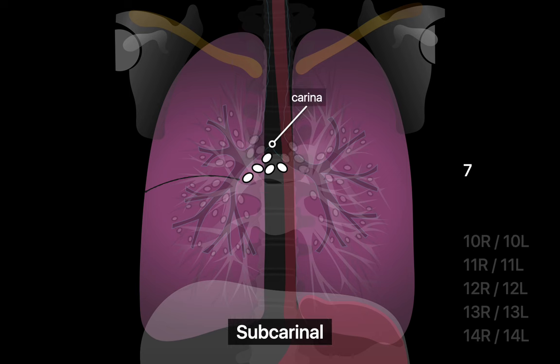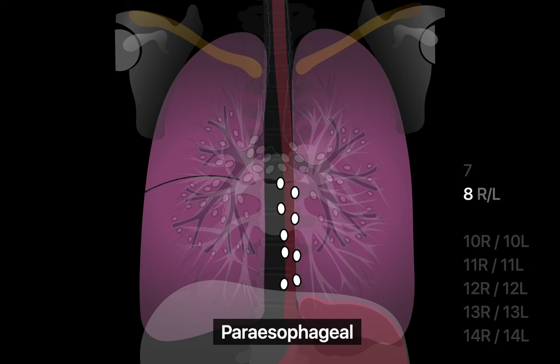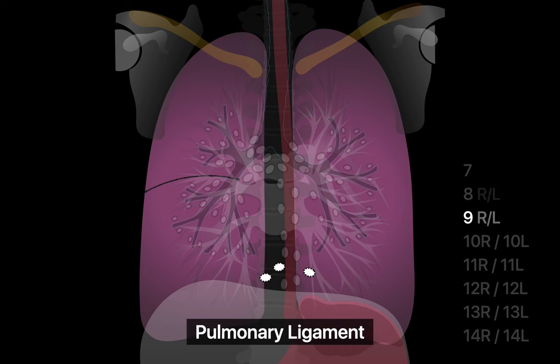Subcarinal lymph nodes are inferior to the carina of the trachea, station 7. Paraesophageal lymph nodes live inferior to the subcarinal station, next to the esophagus, station 8 — unofficially subdivided into 8R and 8L by some. Pulmonary ligament lymph nodes lie within the pulmonary ligaments, station 9 — also unofficially subdivided into 9R and 9L by some.